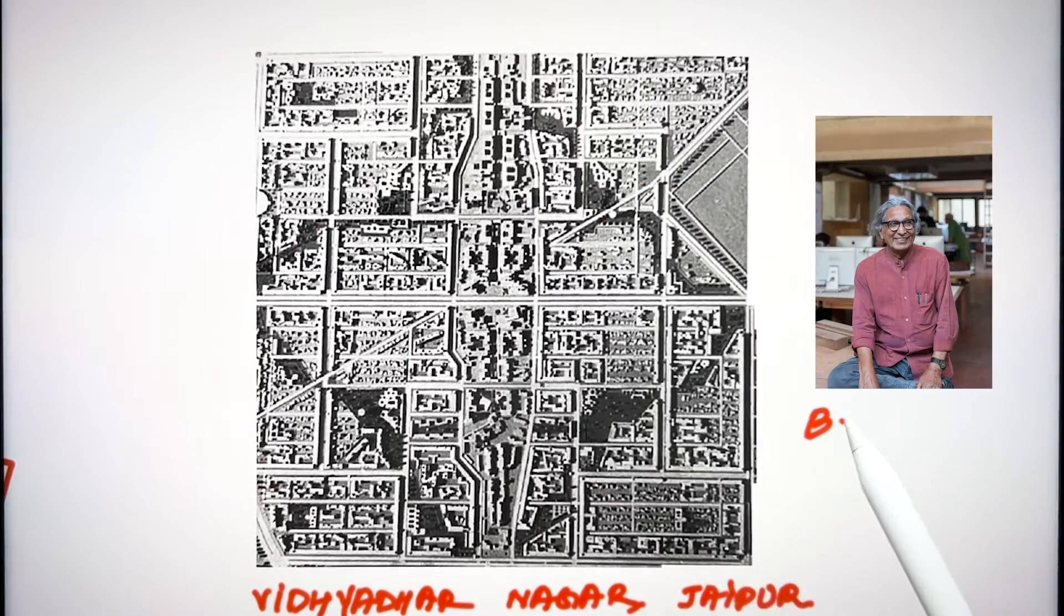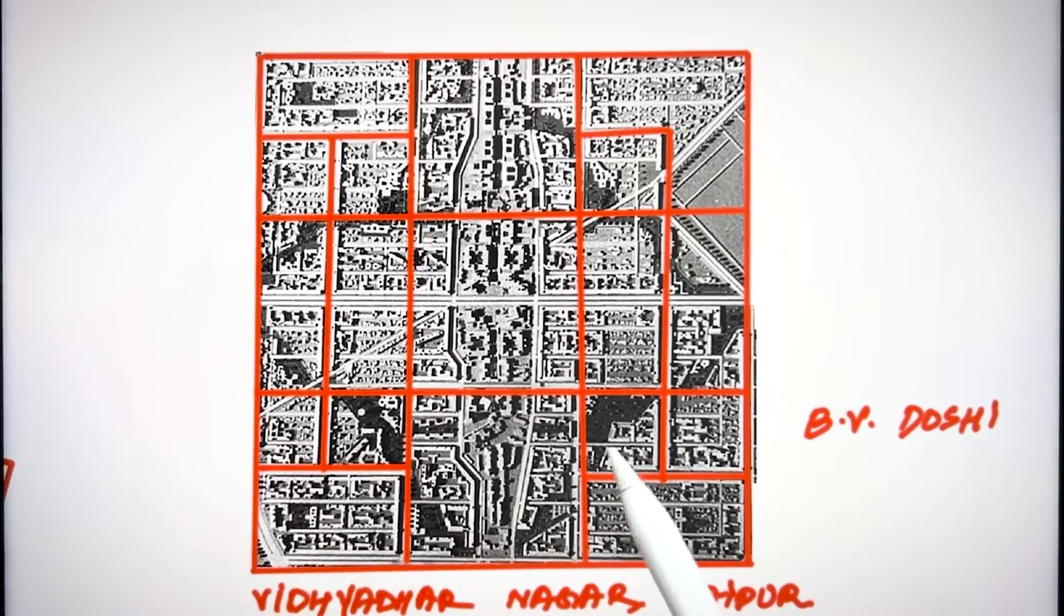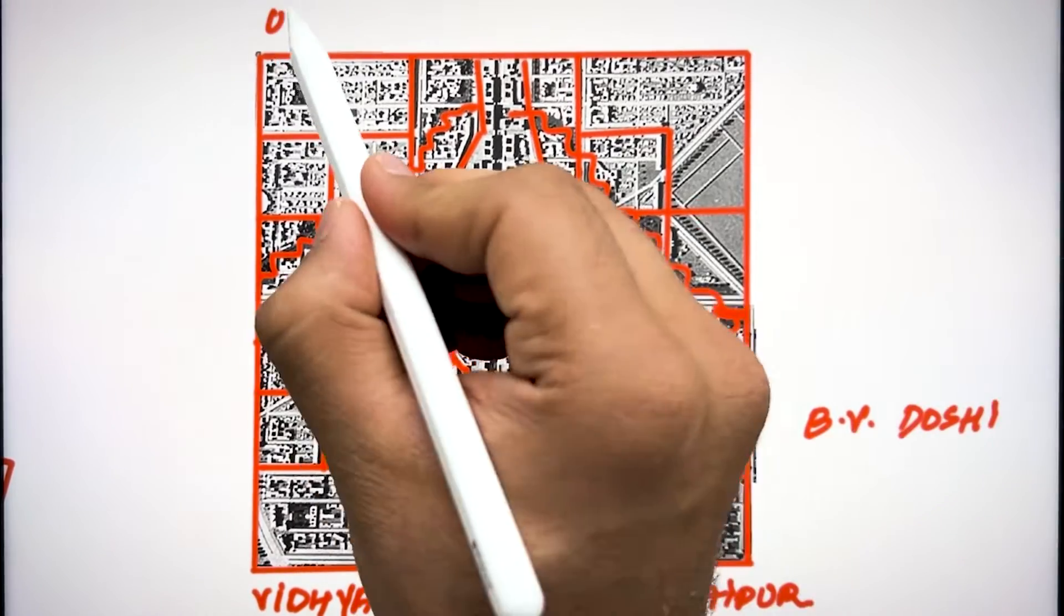This is another project of Jaipur which is the Vidyadhar Nagar designed by B.V. Doshi. Balkrishna Doshi won the Pritzker Prize in 2018. Here also he used the concept of nine grid and added the Indian architecture style for planning the area.